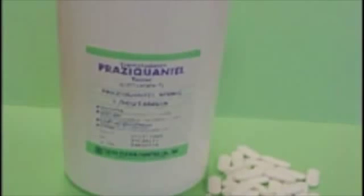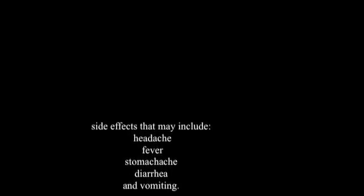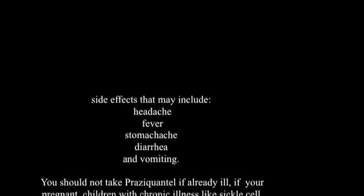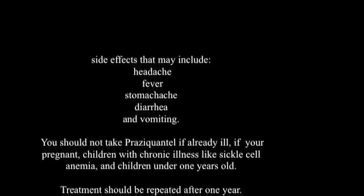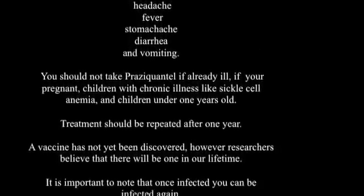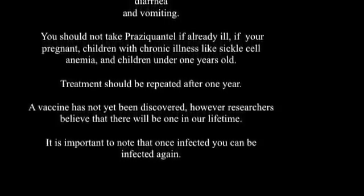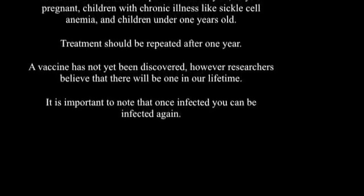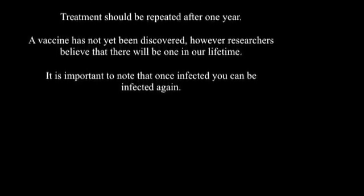There are tests that your doctor can do to find out if you have developed schistosomiasis, and there's medicine available like Praziquantel. It is offered in three doses over the course of one day, spaced out between four to six hours. Side effects may include headache, fever, stomach ache, diarrhea, and vomiting. You should not take Praziquantel if you are already ill, if you're pregnant, or if you're a child with a chronic illness like sickle cell anemia, or children under one year old. Treatment should be repeated after one year. A vaccine has not yet been discovered; however, researchers believe that it will be found in this lifetime.